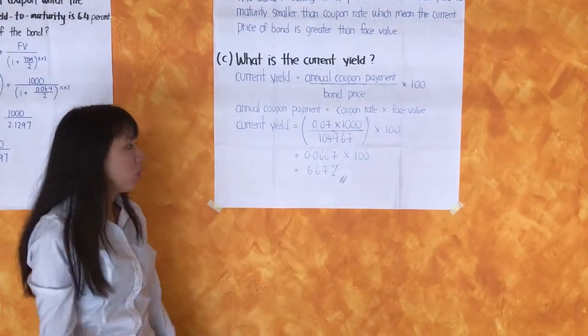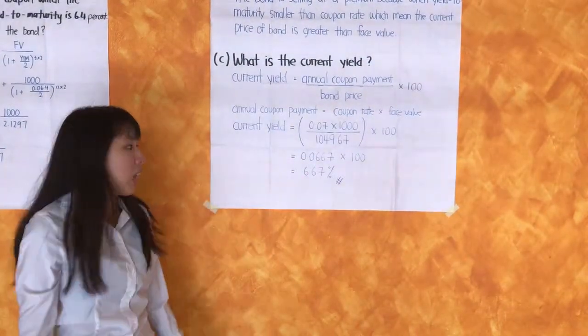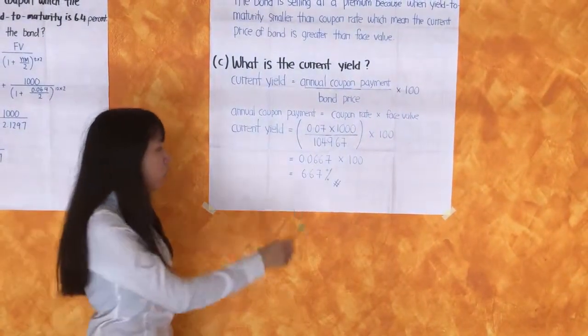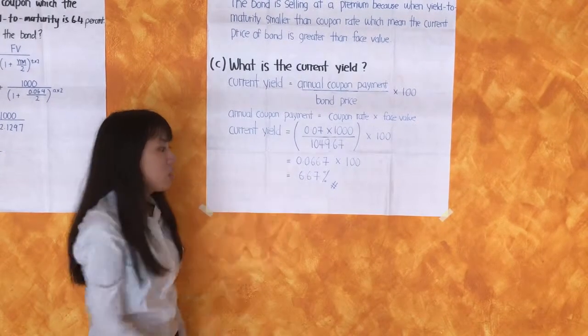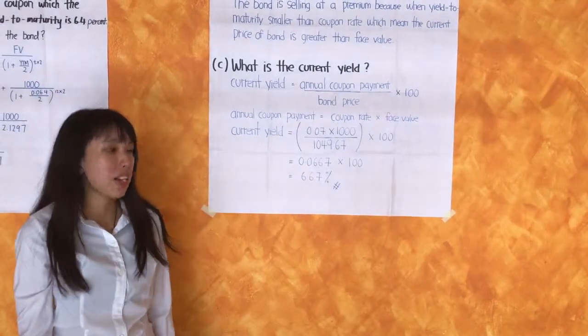Equal to 0.0667 times 100, equal to the final answer 6.67%.